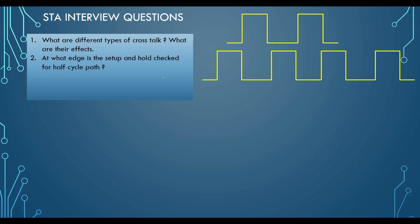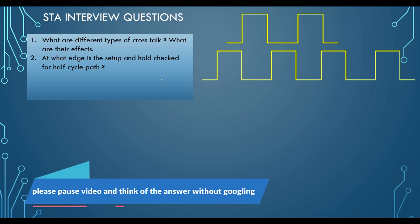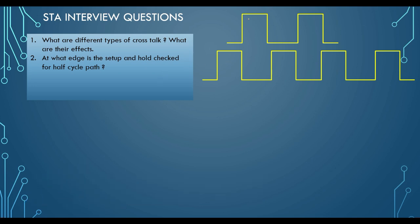The next question is: at what edge is the setup and hold checked for a half cycle path? You can pause the video to think of the answer. In a half cycle path, the data is launched from the launch flop and is expected to be captured in half a cycle. In the timing report, when your launch is rising, your capture will be falling, or vice versa — launch falling and capture rising. In a full cycle path, launch and capture are both rising or both falling. But in the half cycle path, the timing window is just half of the clock period.